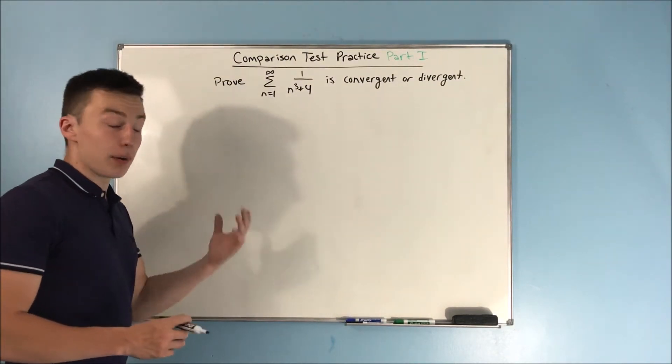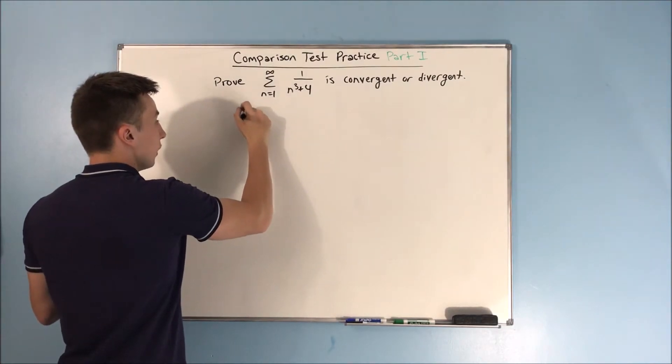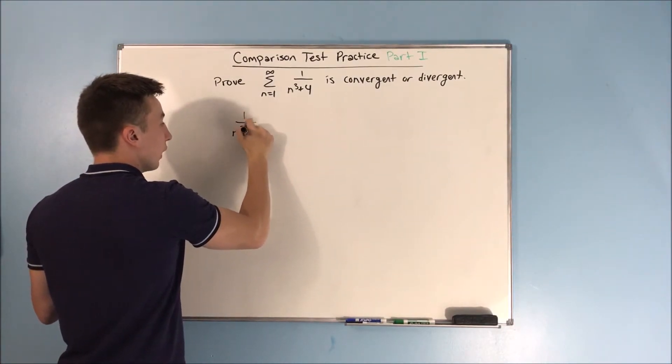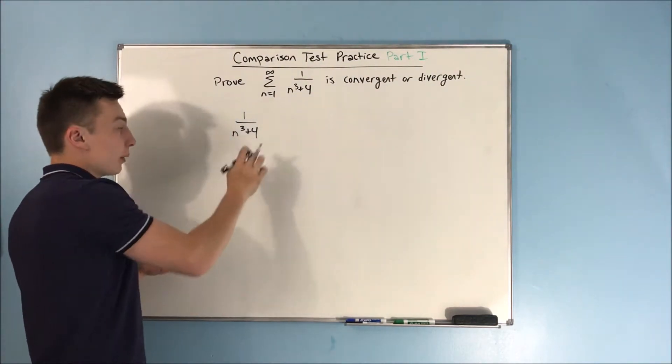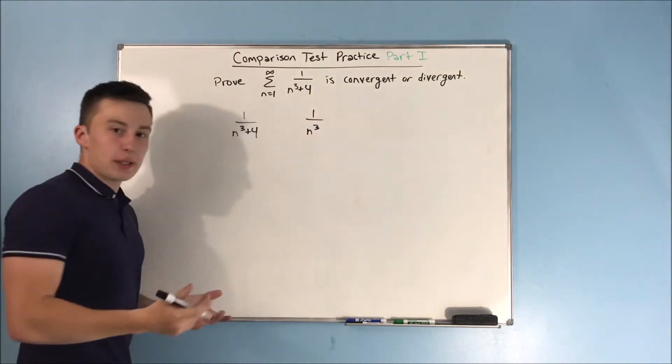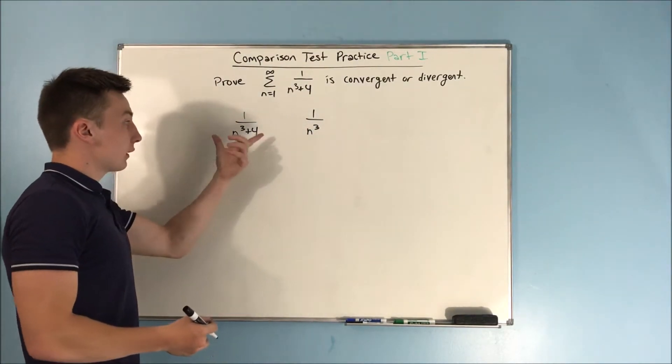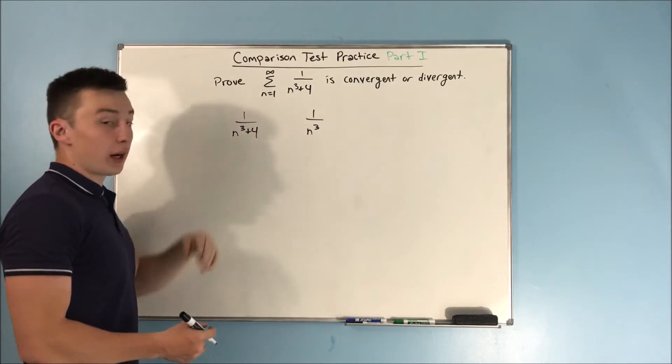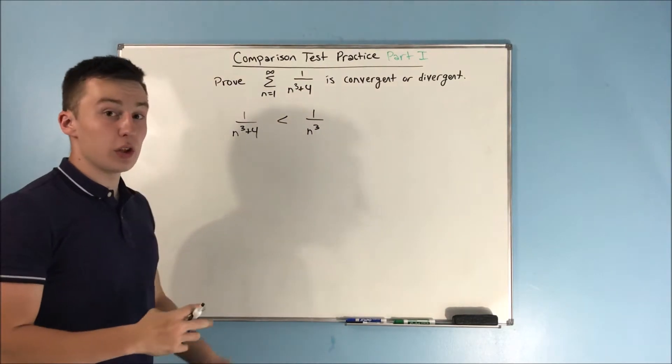To do that, we need to find something to compare it to. We have 1 over n cubed plus 4 here. If we just eliminate this plus 4, then we end up with 1 over n cubed, which is a p-series. Now this plus 4, that's going to make the denominator bigger, which makes the whole fraction smaller. So we know that the relationship is that this is smaller than 1 over n cubed.